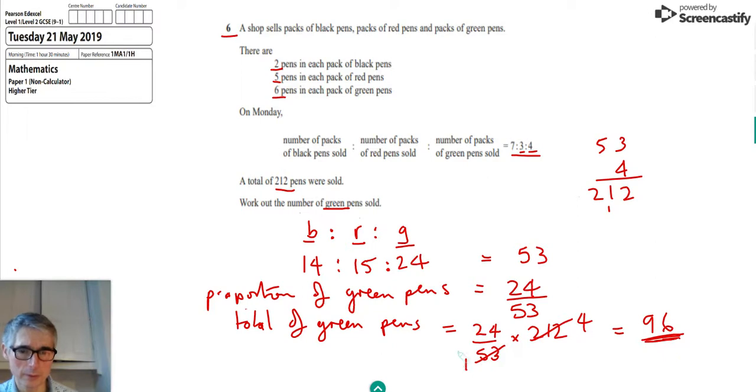So if we multiply that now, 24 times 4 would give us 96. And we've done it. We don't need to bother about the 1 on the bottom there. It's equivalent to saying it was 212 over 1, but 1 times 1 is 1 on the bottom, which we can ignore. So we've got 96 green pens.